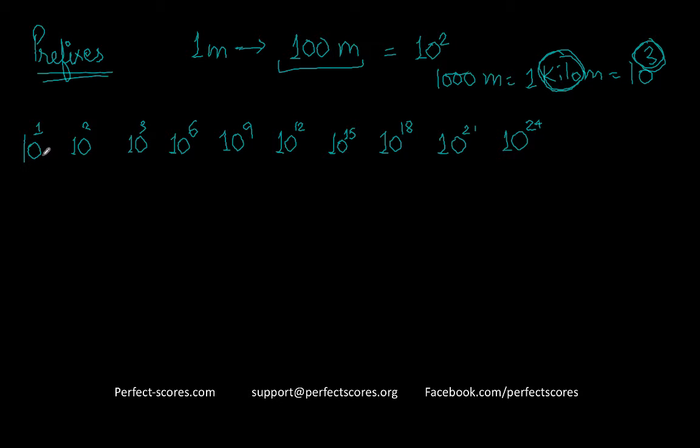So if you have a quantity that has 10 of something, the prefix that is used is deca. If you have a quantity that has 10 raised to the power 2 of the units, for example 100 meters, that will be also known as 1 hectometer. So hecto is the name that we use for 10 raised to the power 2. For 10 raised to the power 3, the prefix that you have to use is kilo.